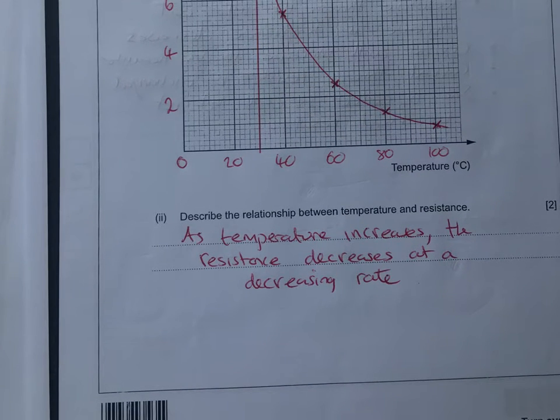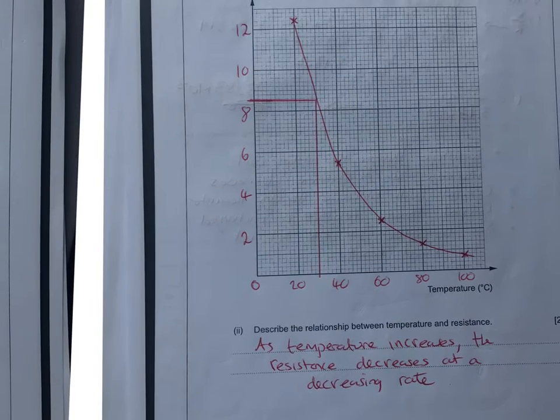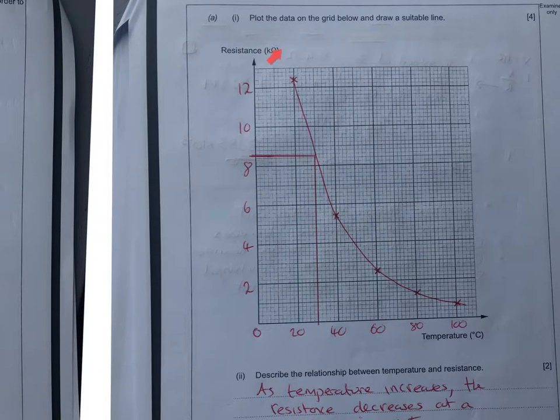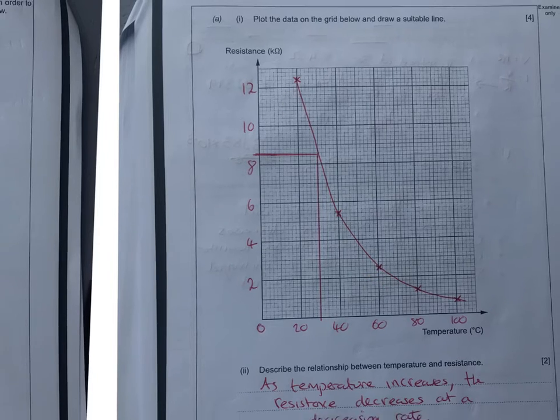Describe relationship of the graph for two marks. A really nice question here. I'm going to say as temperature, as the X increases, then Y, which is in this case the resistance in kilo ohms, is going to decrease at a decreasing rate. That's your two marks. One mark for spotting the trend and another mark for saying at that decreasing rate.